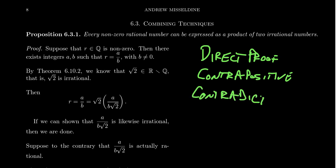These three techniques — direct proof, contrapositive, and proof by contradiction — are all methods to prove conditional statements like P implies Q, but they're just some of many. We also have induction, strong induction, the well-ordering principle, proof by smallest counterexample, combinatorial proof, proofs of conjunctions, disjunctions, and proofs by cases.